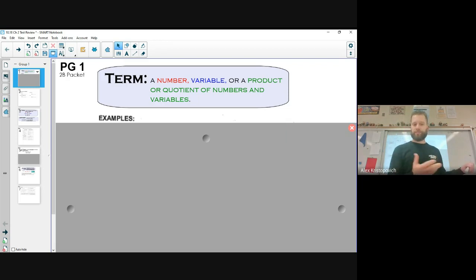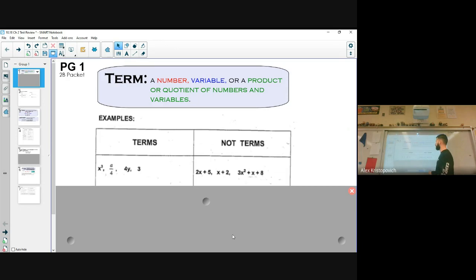So first thing, we're going to turn to page one, and we're going to learn what a term is. So a term is a number or a variable or the product or quotient of a number and variable. So let me show you some examples. So for instance, on the left side here, we have some terms. We have x to the third. That is a term. Actually, let me go back. So I said a number or a variable. So for instance, three is a term, which is very simply a number, but it is a term.